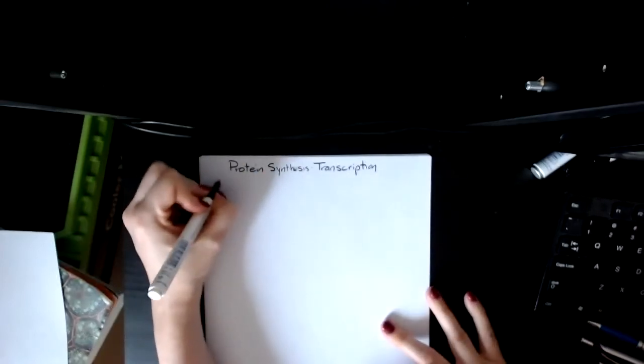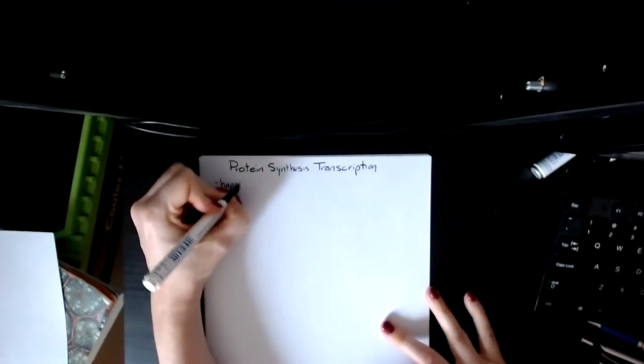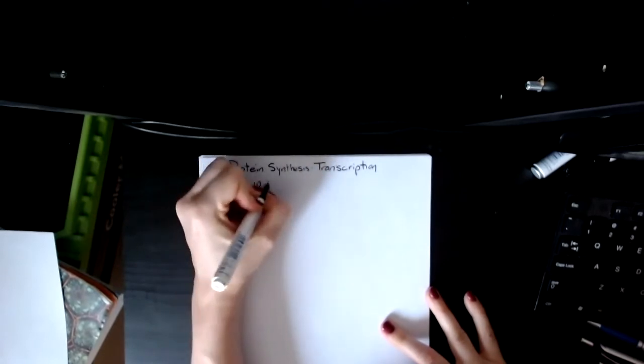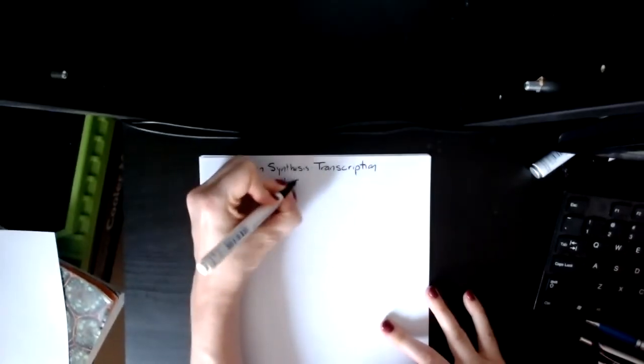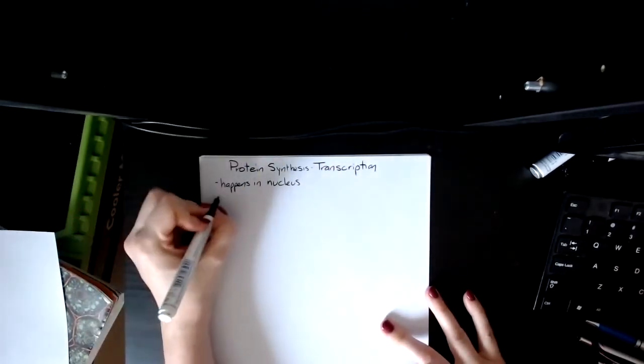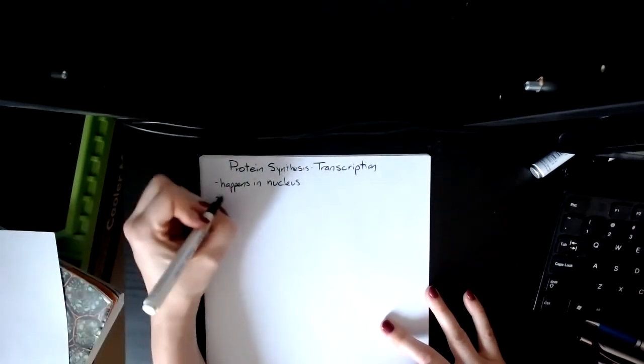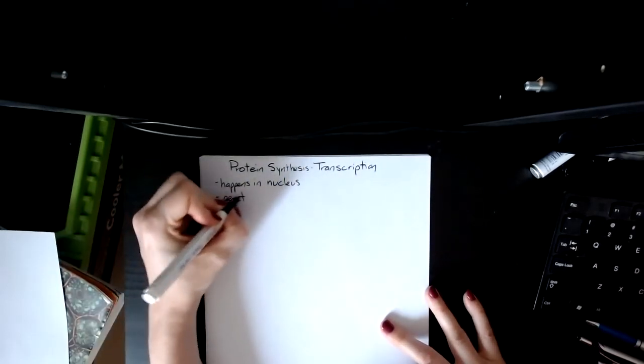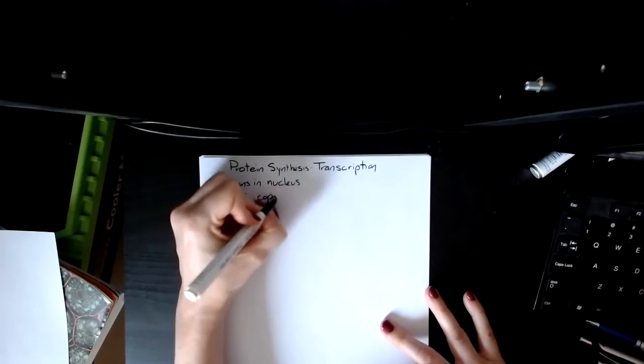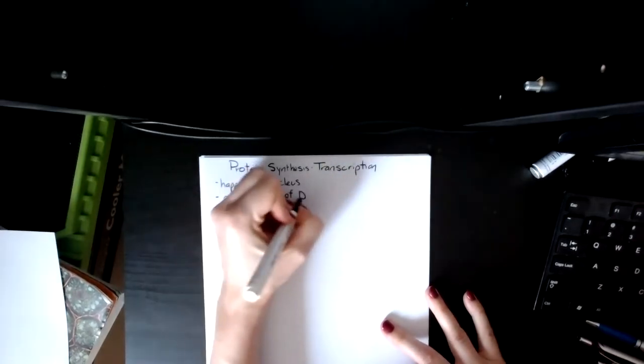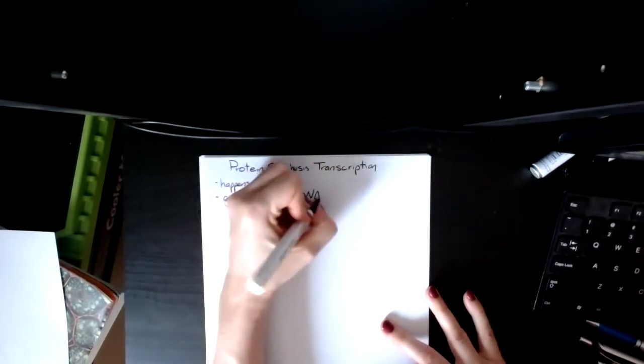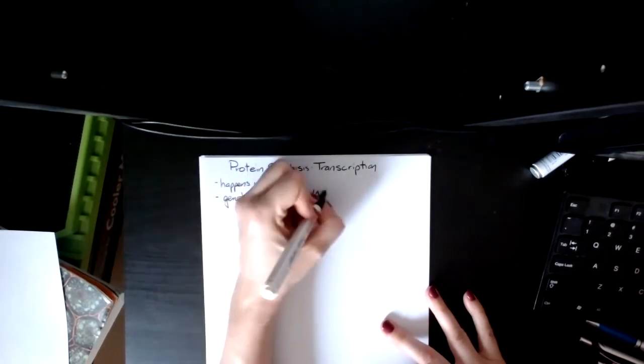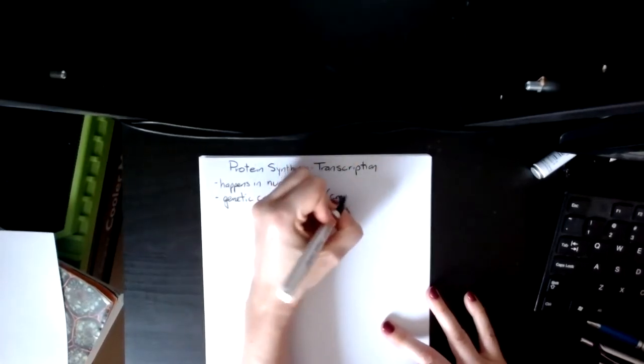It happens in the nucleus. The overall idea is that you are making a genetic copy of the DNA in the form of messenger RNA. So what you're actually creating is you're creating mRNA.